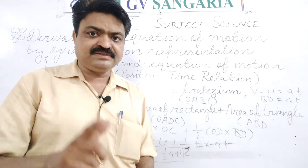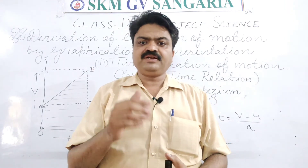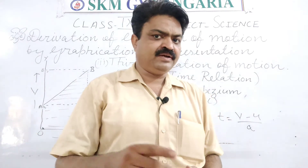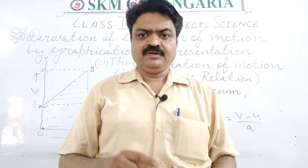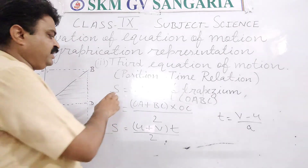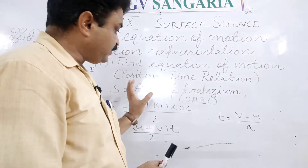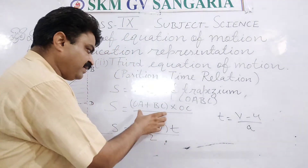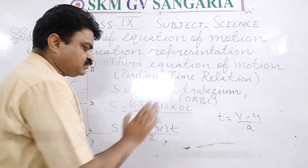Now we come to the third equation of motion. In the third equation of motion, we will consider the same graph as we used for the first and second equations. We use the same formula S = area of trapezium, but now we will take a common factor, and by doing that we get another formula: (OA + BC) × OC / 2.